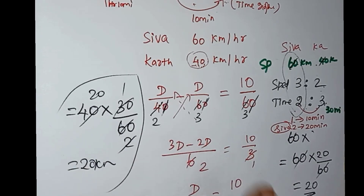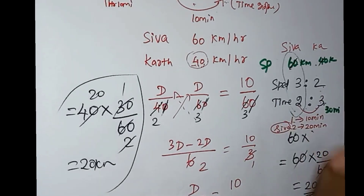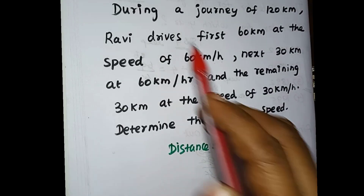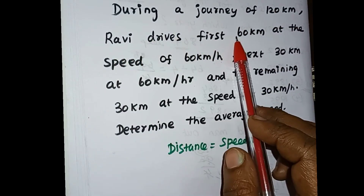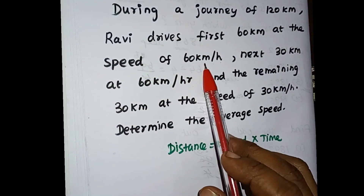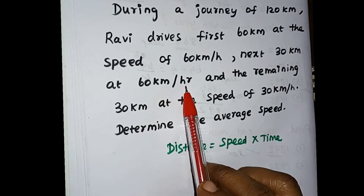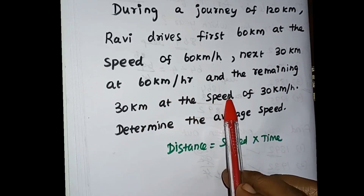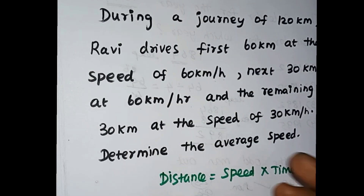Now let's use the shortcut method for the next problem. During a journey of 120 km, Ravi drives the first 60 km at 60 km per hour, the next 30 km at 60 km per hour, and the remaining 30 km at 30 km per hour. Determine the average speed.